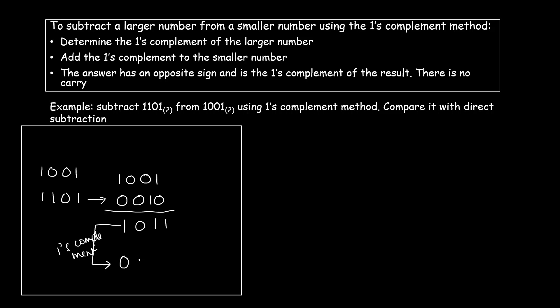So I'll find the one's complement of the result: the one's complement of 1100 is 0100. I need to perform one more action — I need to negate it, since it is in the negative form. The final result is −0100. This is how you find the subtraction when subtracting a larger number from a smaller number using the one's complement method. Note that you are not using subtraction but addition of numbers.